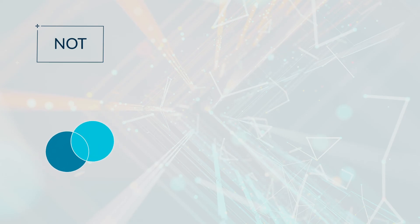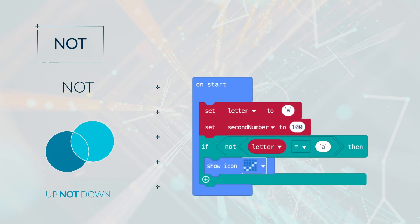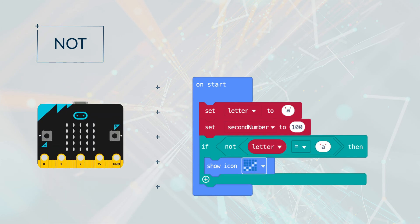NOT reverses the condition. If the condition is true, then the overall result is false. If the condition is false, then the overall result is true. Let's look at this example. If the value in letter is A, then that will be true. The NOT will turn it to false. Any other letter will be false, but the NOT will turn it to true and display the tick.